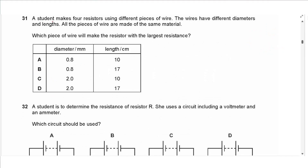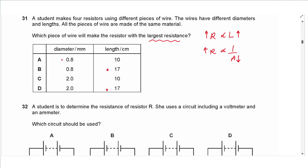Question 31: A student makes four resistors from different pieces of wire of the same material but different diameters and lengths. Resistance is proportional to length and inversely proportional to cross-sectional area. To maximise resistance, choose the longest wire with the smallest diameter. Answer is B.